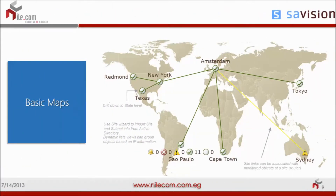Basic maps use a background picture where you have a map and can pinpoint your data center locations, and create WAN connections between your data centers. The WAN connection monitoring works by monitoring the router responsible for that connection — if the router is unhealthy, you'll see a warning or error indicating a problem with the connection to your data center. You can also click on any data center to drill down to the next view.